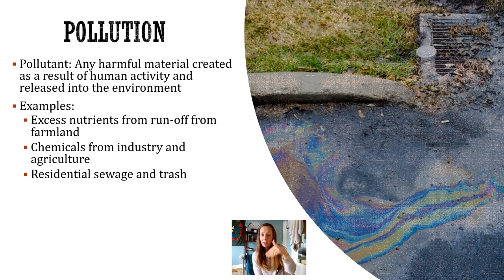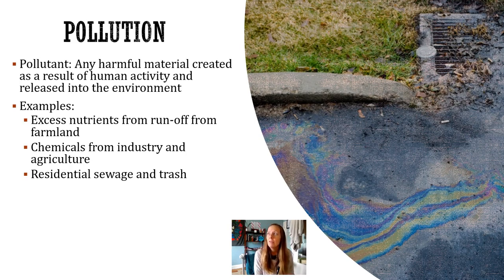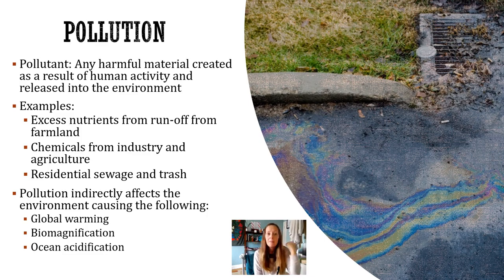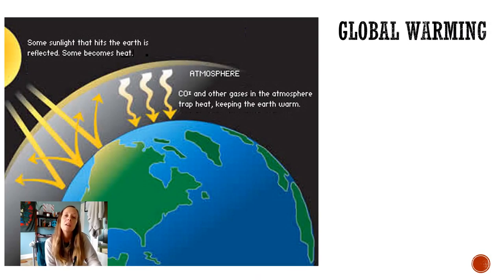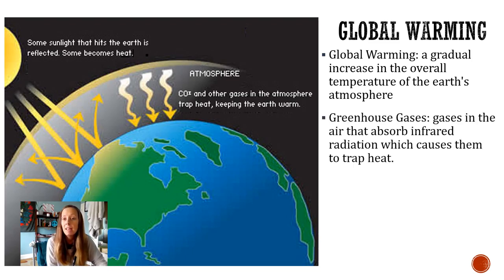Pollution is kind of a big catch-all. A pollutant is anything human-created that's harmful to the environment. Examples include runoff from a farm — sometimes there's too much nitrogen or phosphorus in fertilizer that runs into nearby lakes, fertilizing all the plant life, causing it to overgrow and block sunlight for the rest of the water body. Chemicals from industry and agriculture, oil in the water, trash, and sewage are also pollution. Pollutants indirectly cause three things: global warming, biomagnification, and ocean acidification.